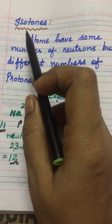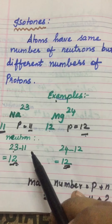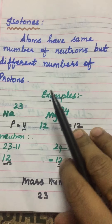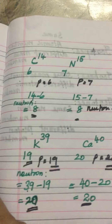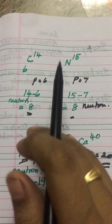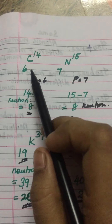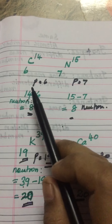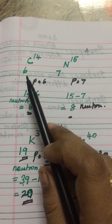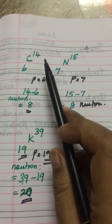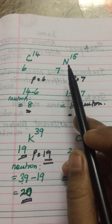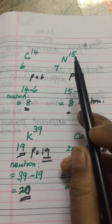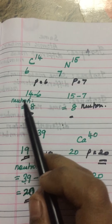So it is called an isotone. The next example for isotones is carbon and nitrogen. Carbon atomic number 6, mass number 14. Nitrogen atomic number is 7, mass number 15.